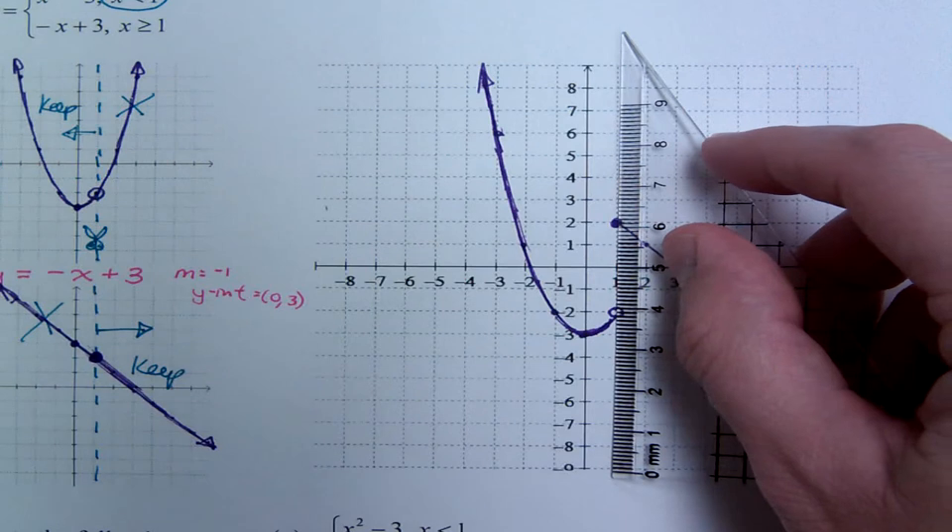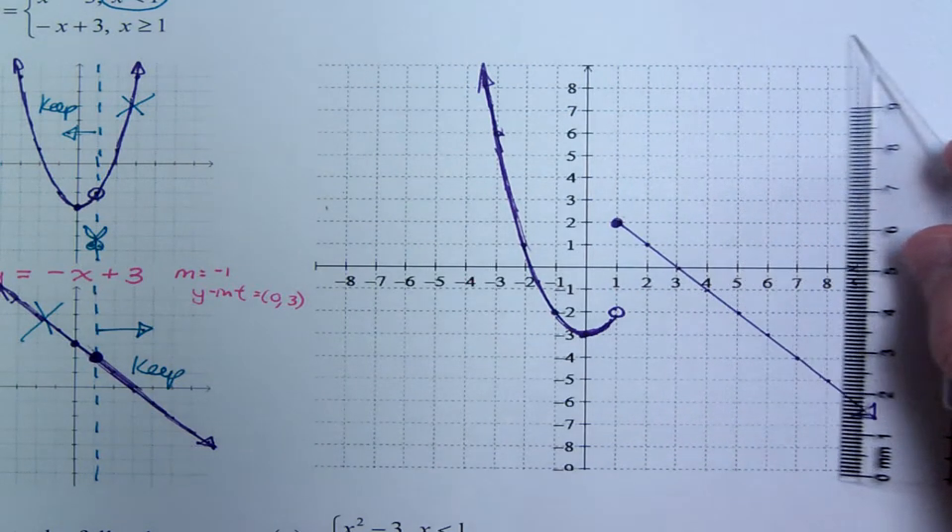So here's our piecewise defined function. You will see that this guy does define a function. If I go across here, every time I draw a vertical line, I'm only going to be hitting one point every time. Even right here, when x is equal to 1, you may say there's two points. This guy is open, so he's not actually there. And this guy is closed. So there's only one point that's here, and it's this guy here at 1, 2. As I keep going across here, of course, this guy is going to be a function.